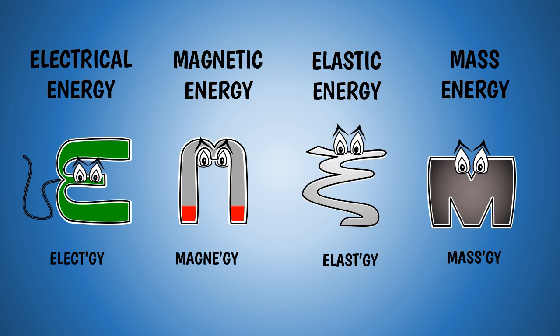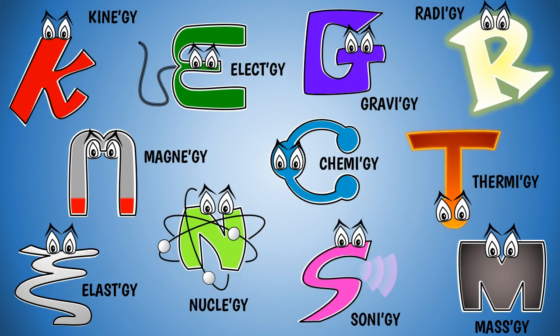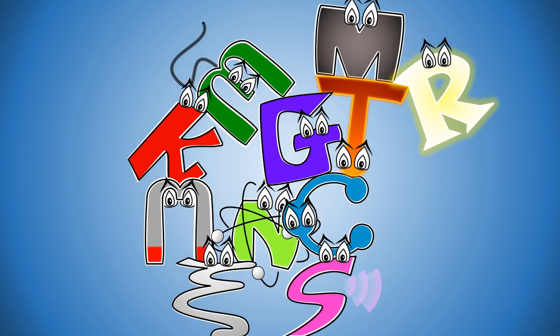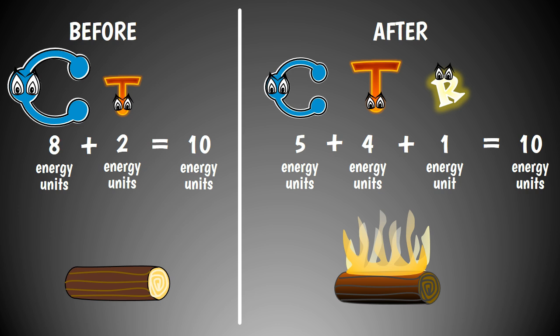So we now know what forms energy can take, but we've not yet answered the question: what is energy? What is it that the members of the E.G.s have in common so that they are all called energy? It's simply the fact that they form a conserved family — that they can transform into each other, and that the total amount of energy always stays the same. Physicists have ways to assign precise numbers to each energy in a particular situation, and no matter what happens, when you add all the numbers together, you always get the same total. We are conserved!